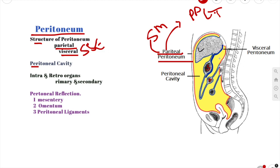The visceral peritoneum invaginates to cover the majority of the abdominal viscera, and it is derived from your splanchnic mesoderm. The visceral peritoneum has the same autonomic nerve supply as the viscera it covers. Unlike the parietal peritoneum, the pain from the visceral peritoneum is poorly localized, and it is only sensitive to stretch and chemical irritation.